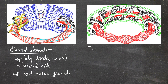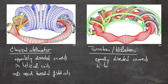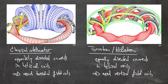In the torsatron or heliotron, we also have helical coils winding around the torus, but now the current flows in the same direction — equally directed currents in the helical coils. As you can see in the drawing, this requires additional vertical field coils shown in green, which we need here. We will discuss both configurations in more detail in the magnetic configuration section.